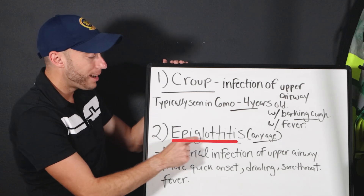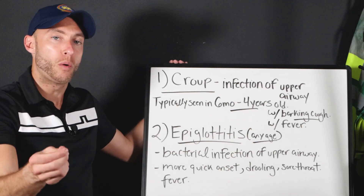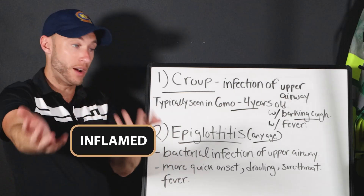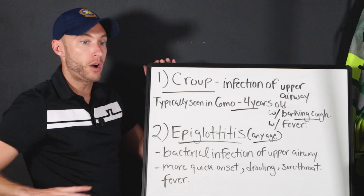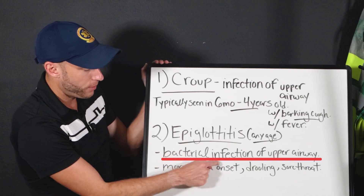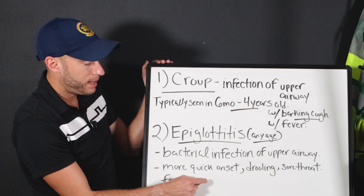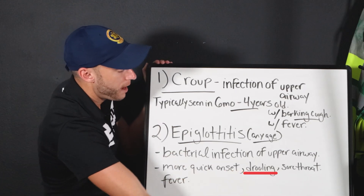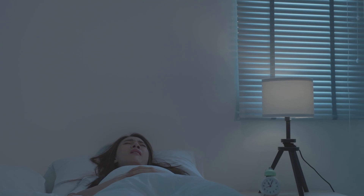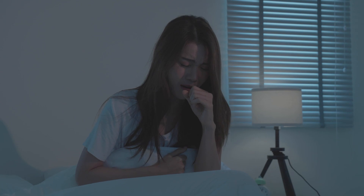Epiglottitis — remember, 'itis' means inflammation. Epiglottitis means the epiglottis is inflamed in the area around the vocal cords. This is a bacterial infection of that area. The big key: you're going to have drooling, sore throat, and it's a faster onset. You may have heard of someone waking in the middle of the night unable to breathe — they have stridor from epiglottitis — and yes, fever as well.